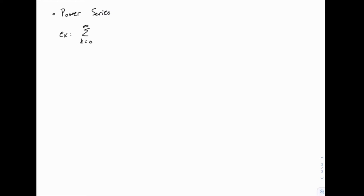We've now seen one example of a power series and finding the interval of convergence. Let me show you a couple other examples. The one we saw earlier was x to the power of k, starting at k equals 1. Now there's a subtle difference: I'm starting at k equals 0. For the rest of this material on power series and Taylor and Maclaurin series, we're going to use k equals 0 as our starting point.